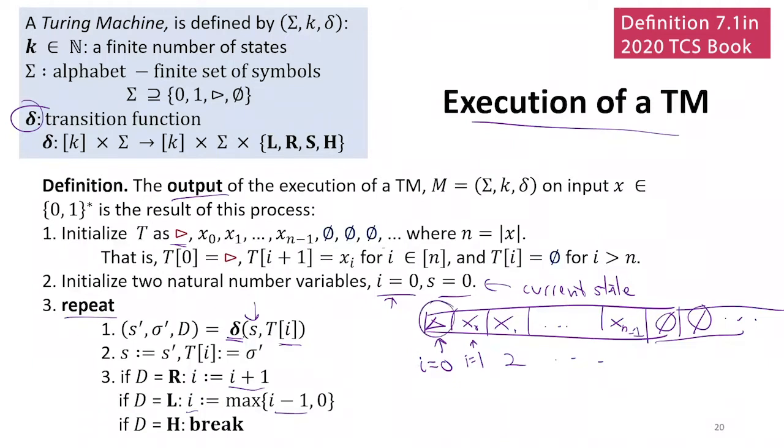Then each step, we're going to look up the transition function. The transition function takes two inputs: it takes a state and a symbol. So these are the three outputs that are returned: the new state, the new symbol, and the direction. And then we update the state, we update the tape. This is replacing what was there with some new symbol. And then we move. The definition said the direction can be S to stay. That means i wouldn't change, so we don't actually need to do anything if it's S.